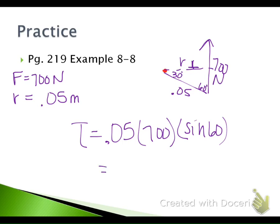We get a torque value of about 30 newton-meters. So applying the force at an angle gives us less torque than a perpendicular force. Applying a force at a perpendicular — 90-degree — angle will give you the maximum torque.